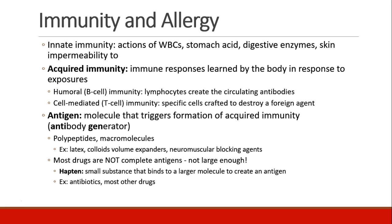There are lots of different ways of classifying and categorizing immunity. For example, we can talk about innate immunity, which is the actions of your white blood cells, your stomach acid, digestive enzymes, and your skin's impermeability to pathogens. All of this is sort of nonspecific protective mechanisms that the body has. We also have acquired immunity, which are the immune responses that the body learns in response to prior exposures to pathogens.